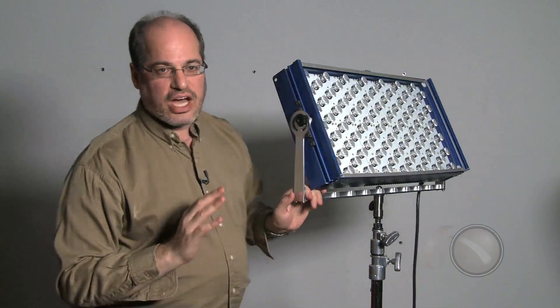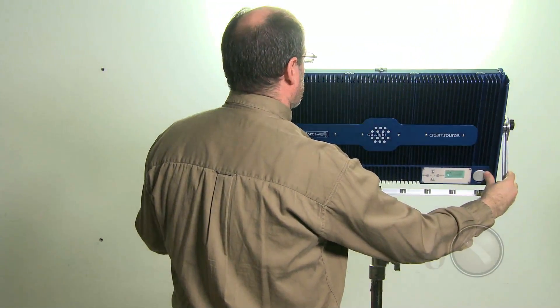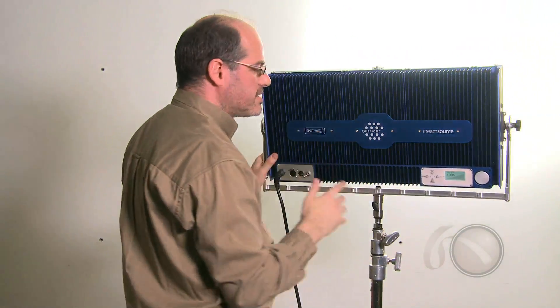This light is the equivalent of about a 575 watt HMI, which is a lot. It only eats about 300 watts, but you can see it puts out a heck of a lot of light.